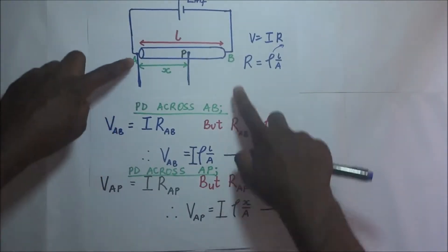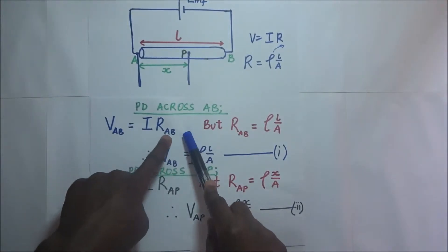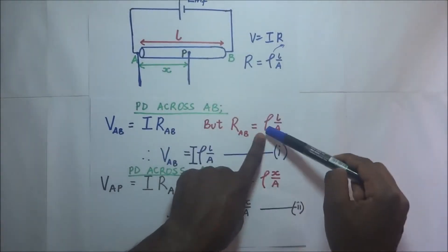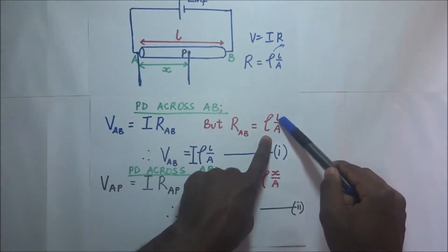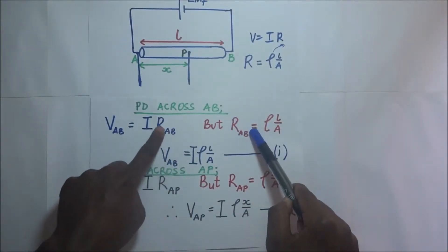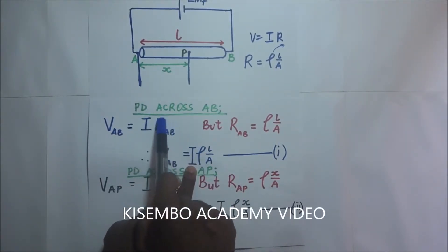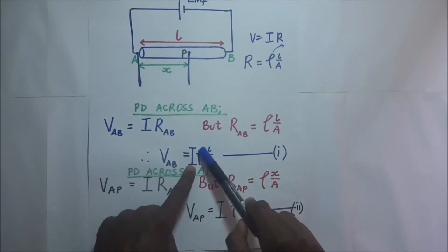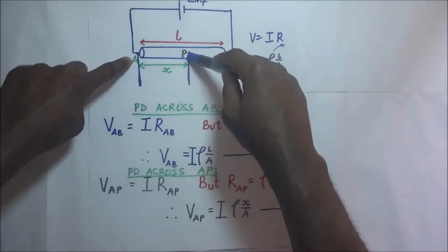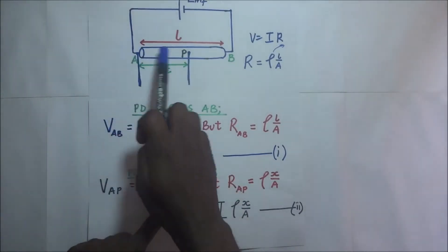The potential difference across AB is going to be equal to the current going through that wire times the resistance of AB. The resistance of AB can be expressed in terms of the resistivity of that wire times the length L over the cross-sectional area A. So substituting, V_AB is equal to I times ρL/A. Similarly, the potential difference across AP equals the current through AP times the resistance of that portion of the wire.